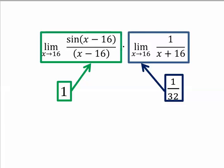So the first limit exists and is equal to 1. The second limit exists and is equal to 1 over 32. And so we can take the product and conclude that the overall limit is equal to 1 over 32.